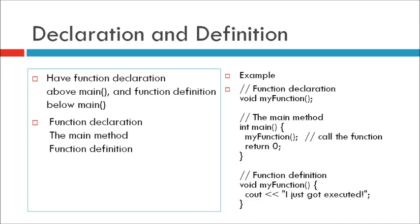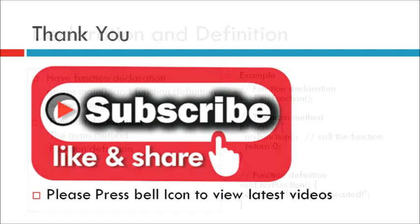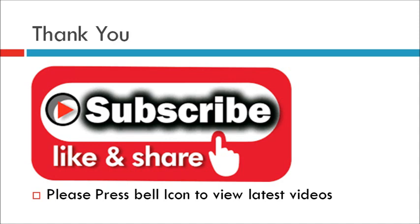For example, function declaration: void myFunction; (semicolon). Then integer main is the main function, followed by the body and return 0. After main, there is the function definition: void myFunction() { cout << "I just got executed"; }. Here we see that void myFunction is declared before main and the body of the function is after main. To get more videos of this series, please like, share, and subscribe, and do not forget to press the bell icon to view the latest videos. Thank you.